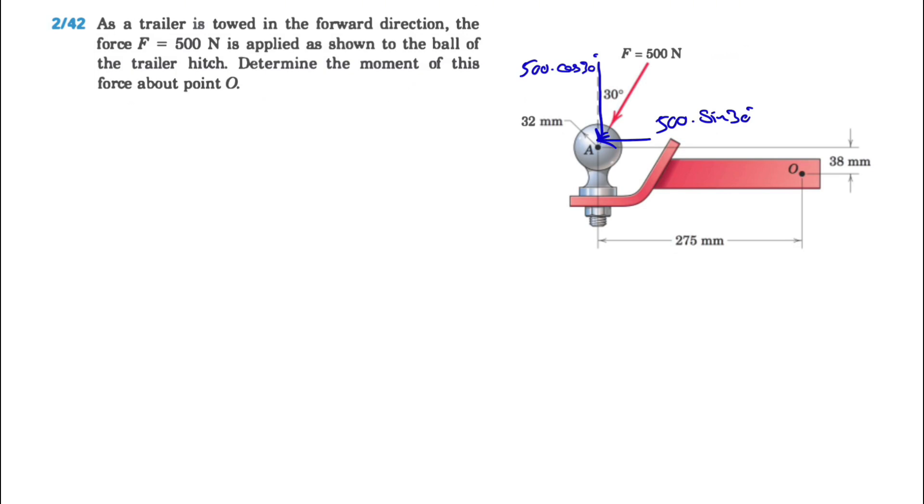We're looking for the moment about point O. We'll call counterclockwise positive. Let's start with the x component, which is 500 times sine of 30 degrees. As we can see about point O, this moment is in this direction, so counterclockwise.